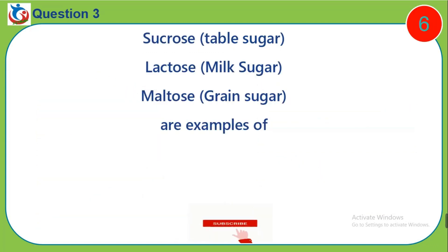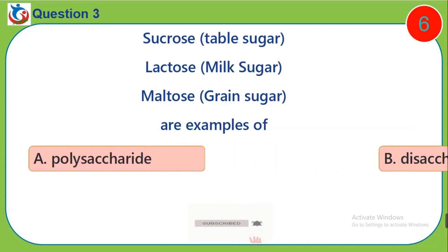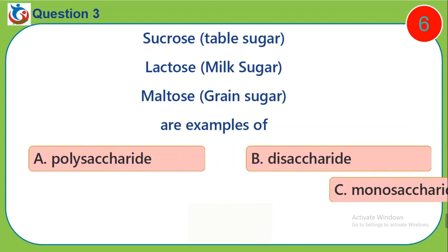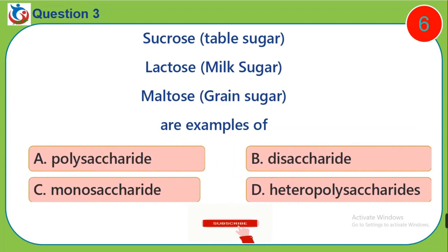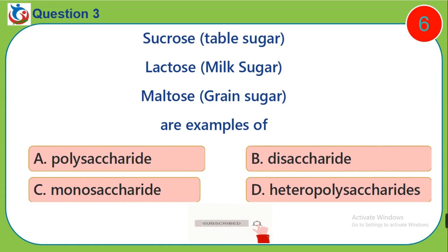Question 3. Sucrose (table sugar), lactose (milk sugar), maltose (grain sugar) are all examples of: A. Polysaccharide, B. Disaccharide, C. Monosaccharide, D. Heteropolysaccharides.